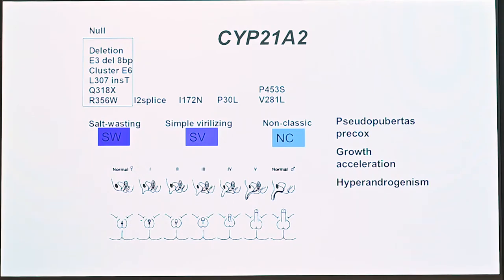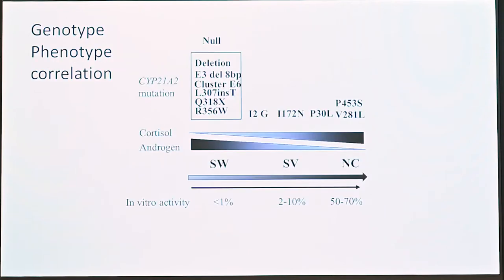If a child is not detected in screening or diagnosed in the newborn period and has the non-classic form, they will present with androgen excess symptoms such as growth acceleration, or what we call pseudo-pubertus precox with hyperandrogenism. In the genotype-phenotype diagram, the further left you are, the less cortisol and the more androgens.